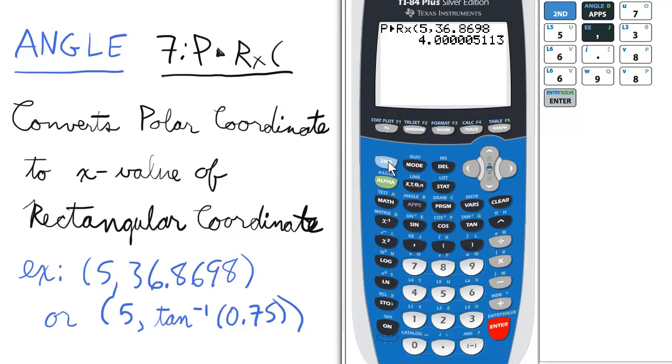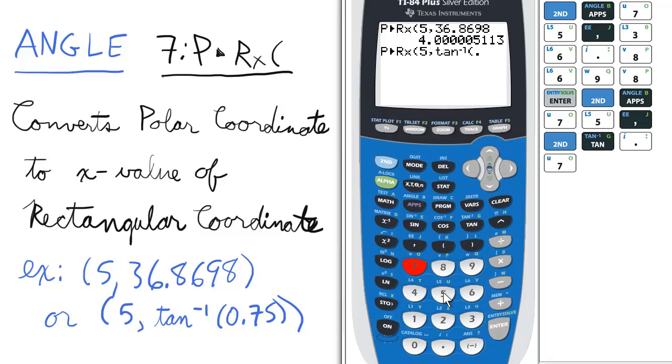If you wanted to get 4 exactly, you can go to the angle menu, select 7, and enter 5, inverse tan of 0.75.